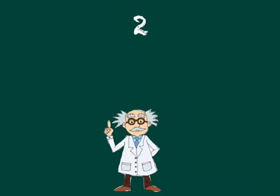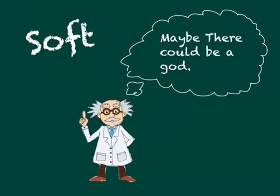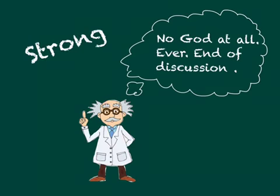There are two main types of Atheists: soft Atheists and strong Atheists. Soft Atheists believe that there could be a God, but they're not sure. Strong Atheists believe that the existence of a God or a deity is impossible.